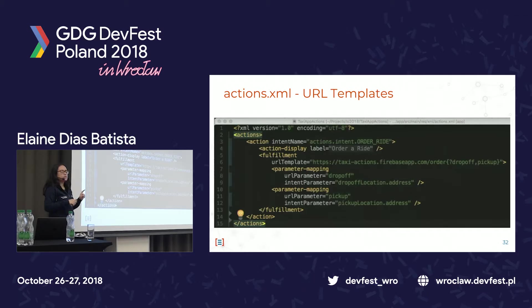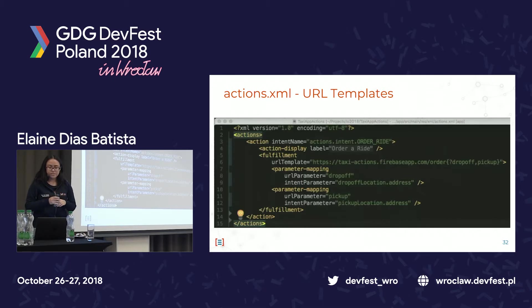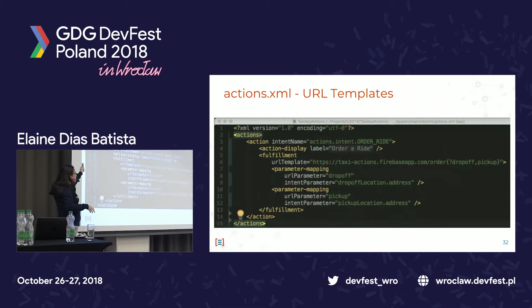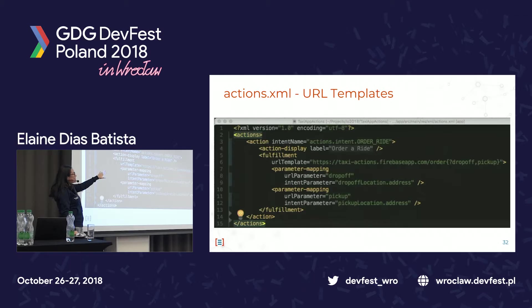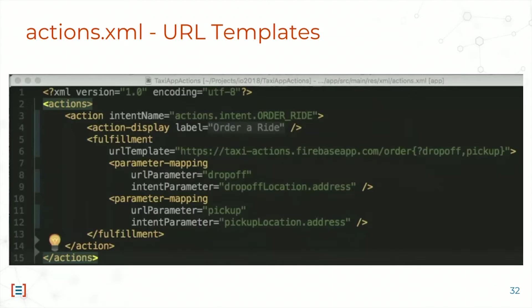For the URL template approach, the actions.xml file looks like this — it's just a file you integrate in your project. Here's the example of ordering a ride. You put the intent name for the ride, the label, and the deep link URL with the parameters you want to pass to your application. The only thing you do in this configuration file is map the parameters from the URL parameter to the intent parameter. It's not that hard.